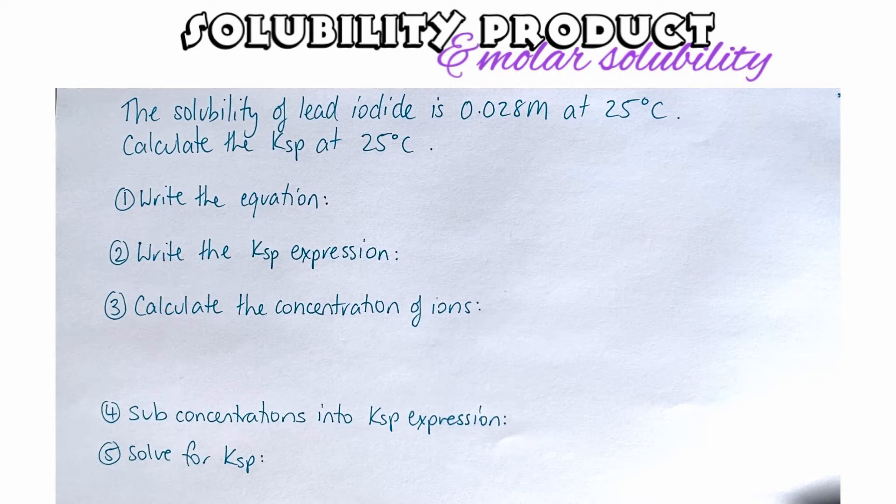To teach you how to determine what the Ksp is going to be when you're only given concentration, I'm going to walk you through an example. Here is our first example: the solubility of lead iodide is 0.028 molar at 25 degrees Celsius. Calculate the Ksp at 25 degrees Celsius.